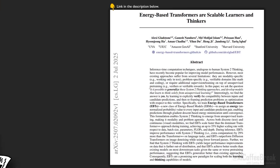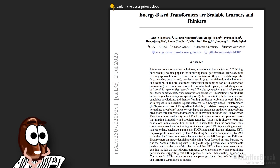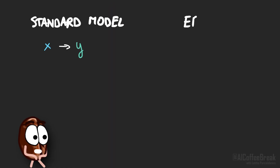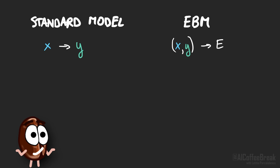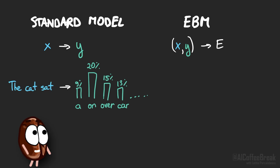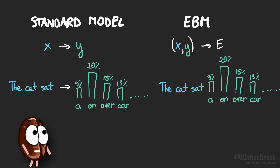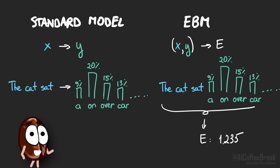Energy-based transformers were introduced in a paper by Alexei Gladstone and colleagues. The idea is to make transformers part of so-called energy-based models — a class of models that don't directly output probabilities, but instead assign an energy score to how well a guess fits the input. EBMs flip the usual way neural networks work. A standard neural net takes an input x, say an image or a question, and directly outputs a probability distribution y over possible answers. An EBM, in contrast, takes both x and y as input, and outputs an energy score for that pair. Low energy corresponds to well-fitting answers, and high energy to unfitting ones.